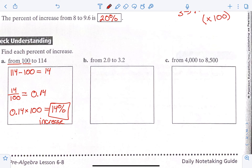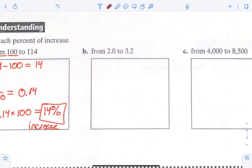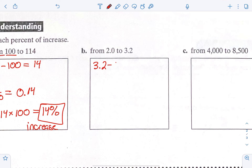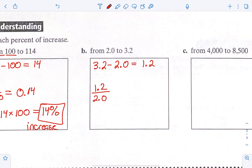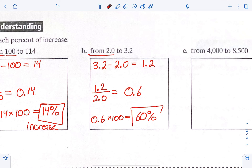From 2.0 to 3.2 — what you should have done: 3.2 minus 2.0 gives us 1.2. That's our amount of change. So we put 1.2 on top over 2.0 because it said 'from 2.0,' and we do the division — we got 0.6. 0.6 times 100, we should have gotten 60%. This was an increase because we went from 2.0 to 3.2, which is getting bigger.